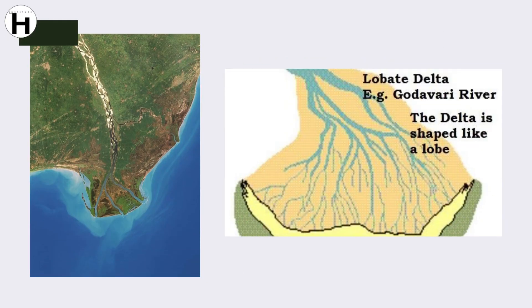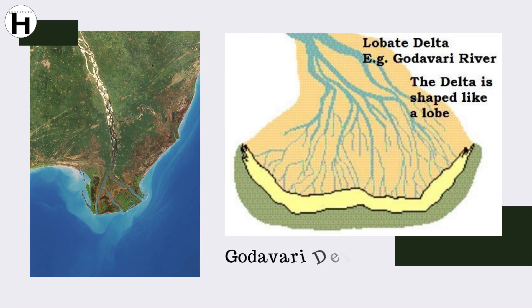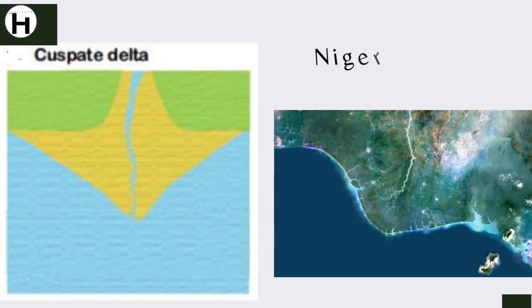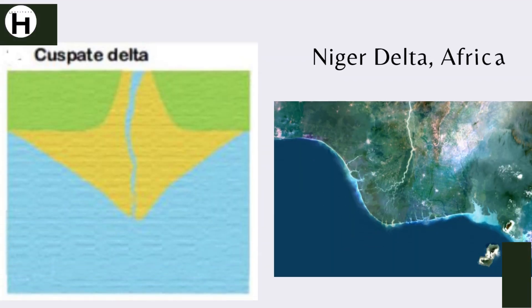The Lobe delta is an elongated one, shaped like a lobe, e.g. the Godavari delta and Krishna delta. The Cuspate delta is a kite-shaped delta, e.g. the Niger delta in Africa.